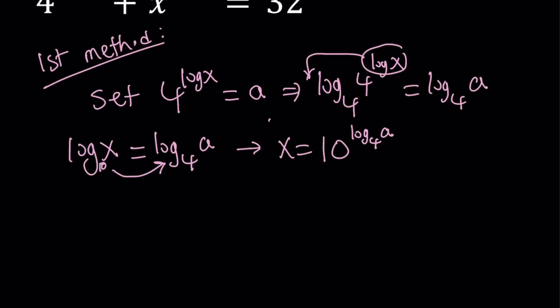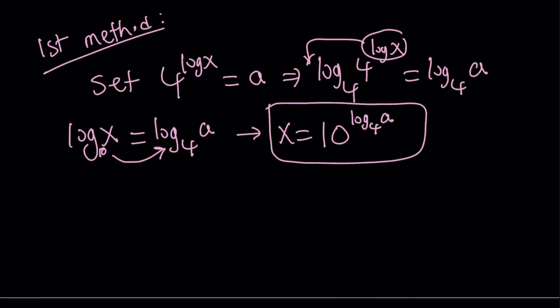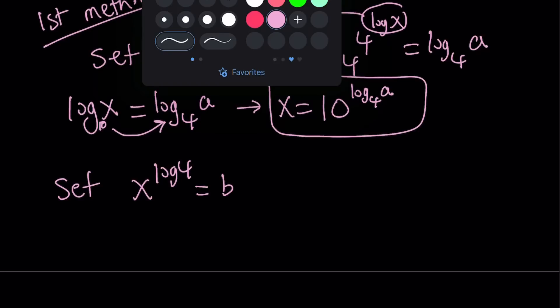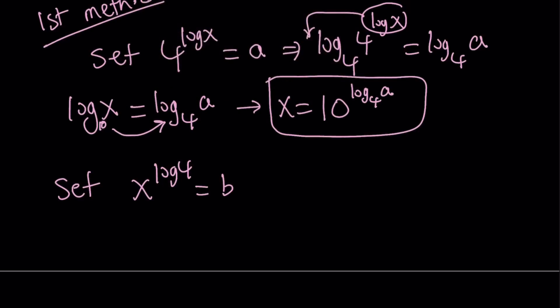Great. So we found the value of x in terms of a, which is fine, because I want to associate a and another variable. Now we're going to go ahead and set the other one, which is x to the power log 4, equal to b. And then from here, finding x is fairly easy because x is the base. In the other case, it was in the log and it was in the exponent. But this time it's easy. You just need to raise both sides to the power 1 over log 4. That's what you got to do.